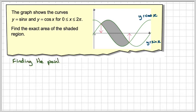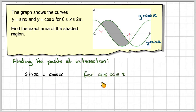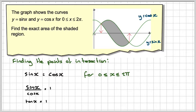To do that we just put the two curves equal to each other. So we're going to say that sin x is equal to cos x, and solve it between 0 and 2π. When solving sin x equals cos x, we rewrite it as sin x over cos x equals 1. And we know that sin x over cos x is tan x, so tan x equals 1.